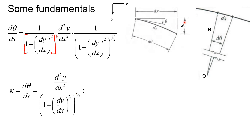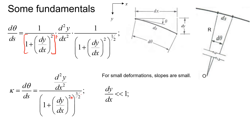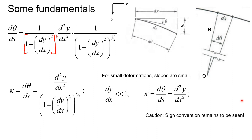In cases where deformations are small, the slope will also be small, so dy/dx can be approximated as 0. Substituting into the curvature equation, we approximately get curvature ≈ d²y/dx². This simpler expression for curvature is applicable when deformations are small.